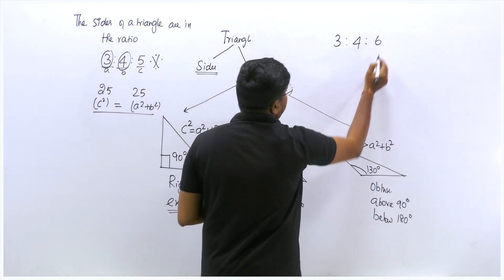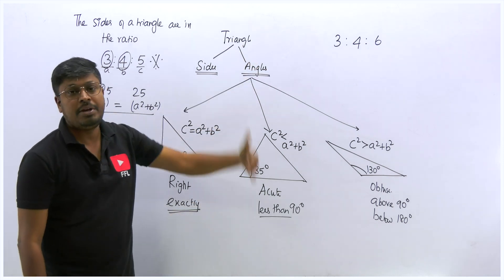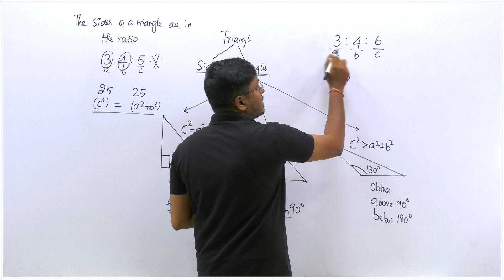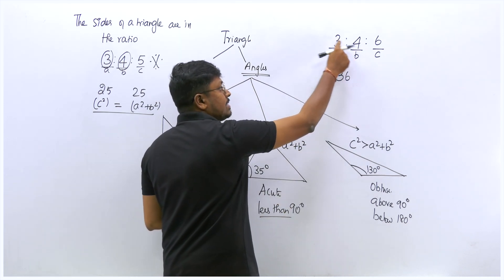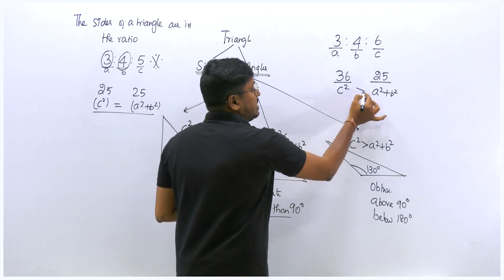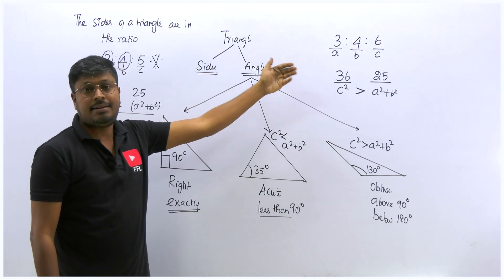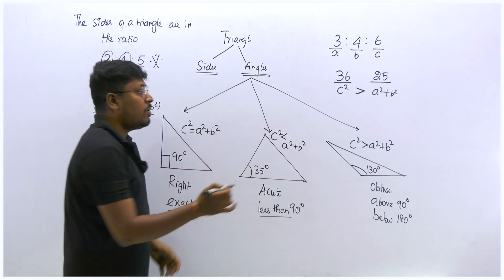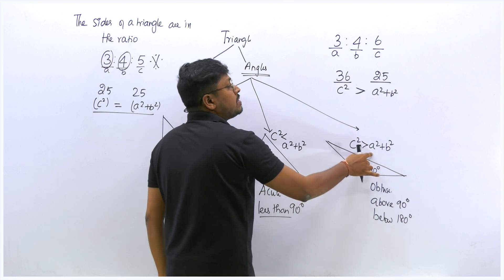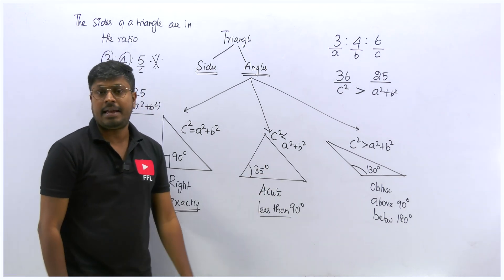Let's take another example: sides in ratio 3:4:6. We assign a=3, b=4, c=6. So c² = 36, and a² + b² = 9 + 16 = 25. Since c² (36) is greater than a² + b² (25), the triangle formed by sides 3:4:6 is an obtuse angle triangle. If c² had been less than a² + b², it would have been an acute angle triangle.